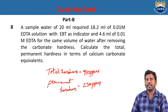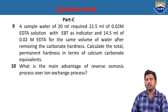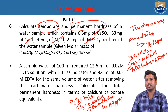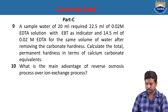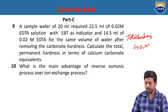Problem 9: A water sample of 20 ml required 22.5 ml of 0.02 molar EDTA solution with EBT as indicator, and 14.5 ml of 0.02 molar EDTA for the same volume after removing carbonate hardness. Calculate total and permanent hardness. Using M₁ for total hardness and M₃ for permanent hardness — total hardness = 2250 ppm.